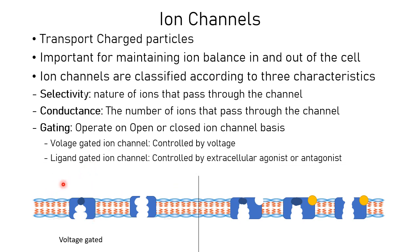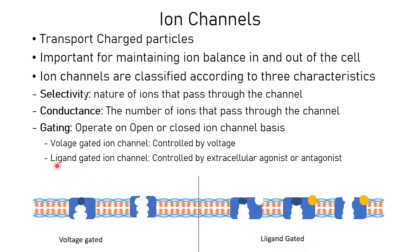Another type of gated channel is the ligand-gated ion channel, which is controlled by extracellular agonists or antagonists. Agonists are substances that bind to the ion channel and encourage its action, while antagonists work in the opposite way. When a ligand binds to the channel, the channel opens — this is known as a ligand-gated channel.